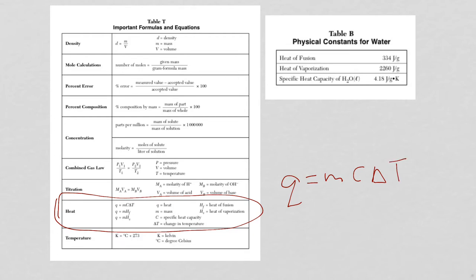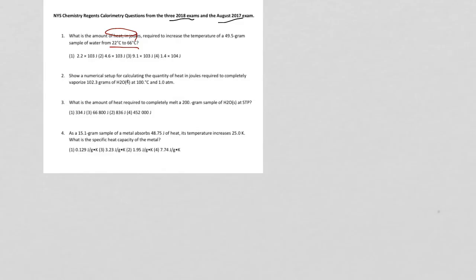So what we're looking at is Q is equal to MC delta T. Well, how do I know that? Because of course we have a change in temperature. So what we're doing here is we are just, as it says in question one, increasing the temperature of water.